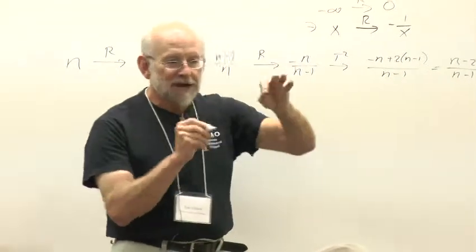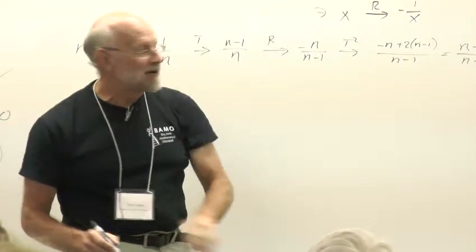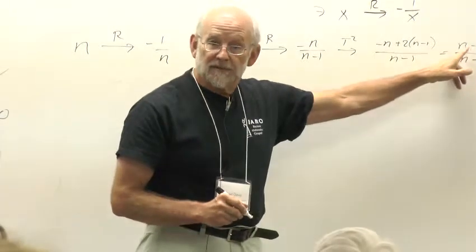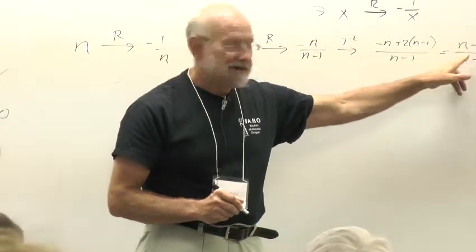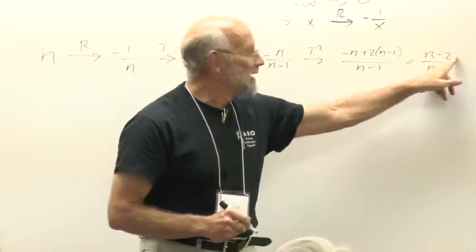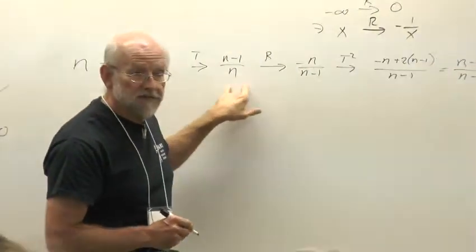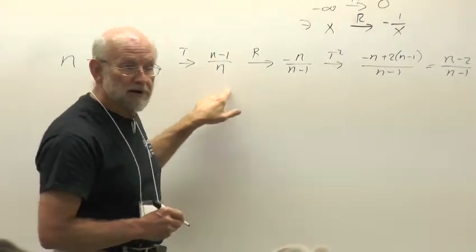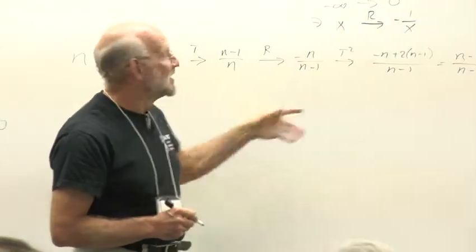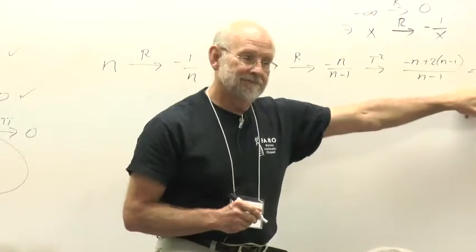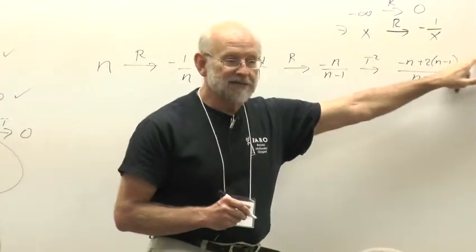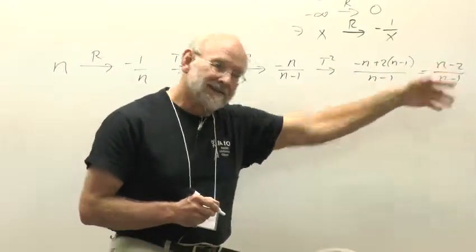After a certain number of steps, this is going to hit 0, right? Because the next one will be N minus 3 over N minus 2. You can see RTT, if you start with something in this form, just subtracts 1 from numerator and denominator. So if you kept doing that, pretty soon the numerator is going to hit 0 when the denominator hits 1, and you're in business.